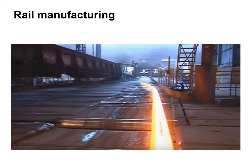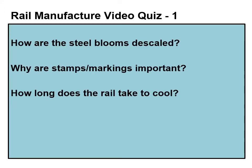Now, watch the short video showing the rolling of hot steel sections into rail sections. There is also a quiz with a series of questions to answer whilst watching the video. Part one of the quiz asks: how are the steel blooms descaled? Why are stamps and markings important? And how long does the rail take to cool?